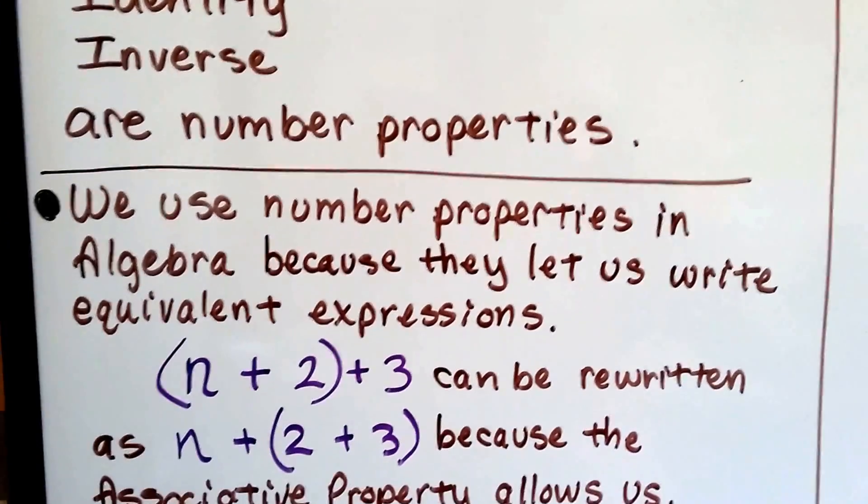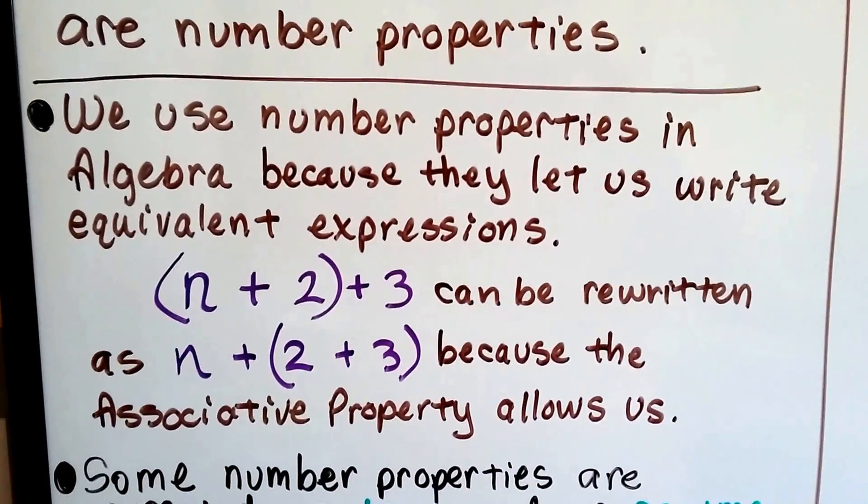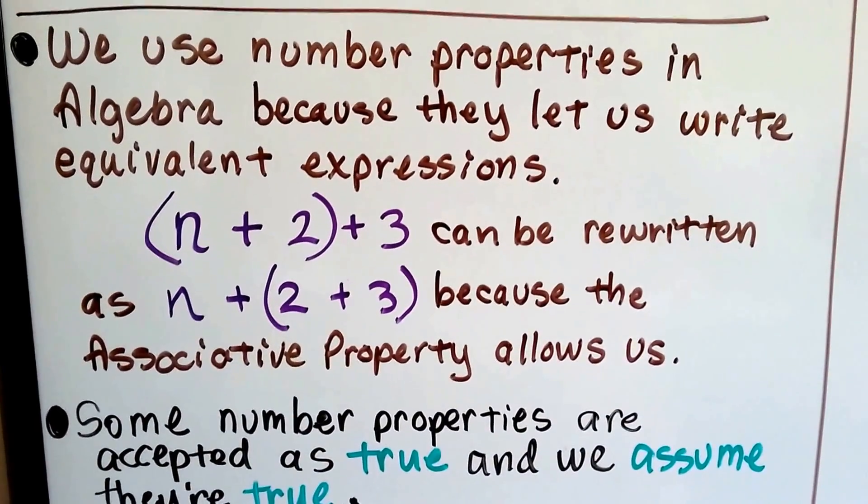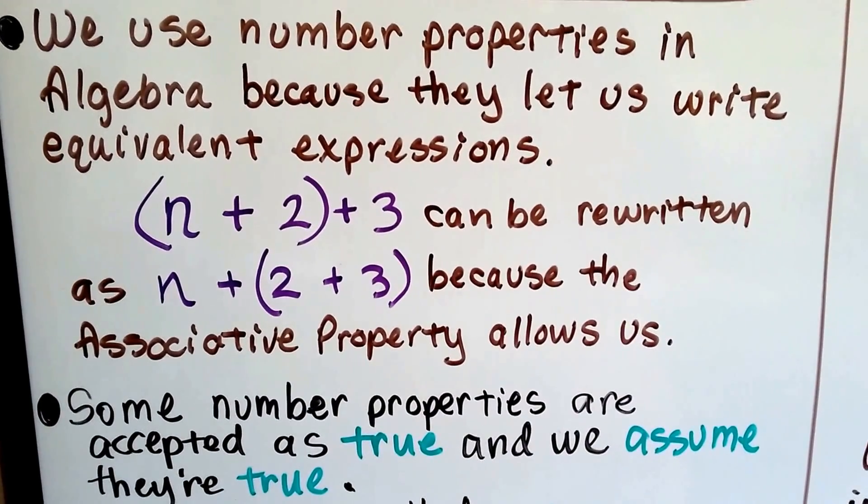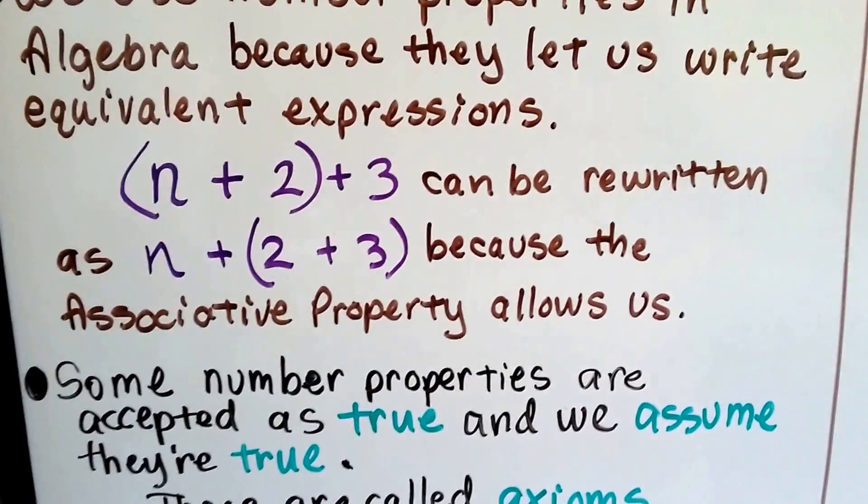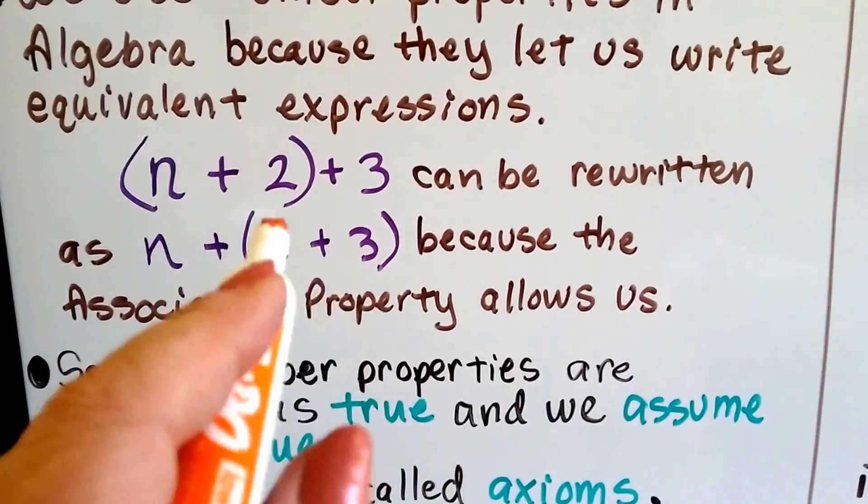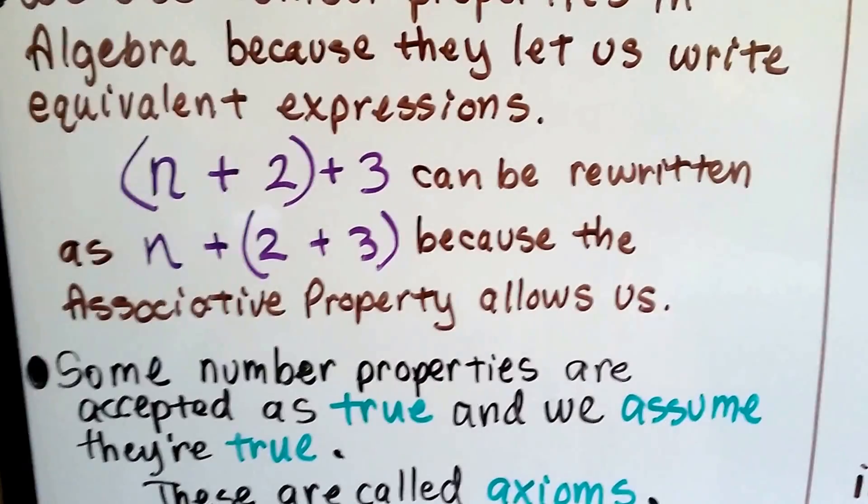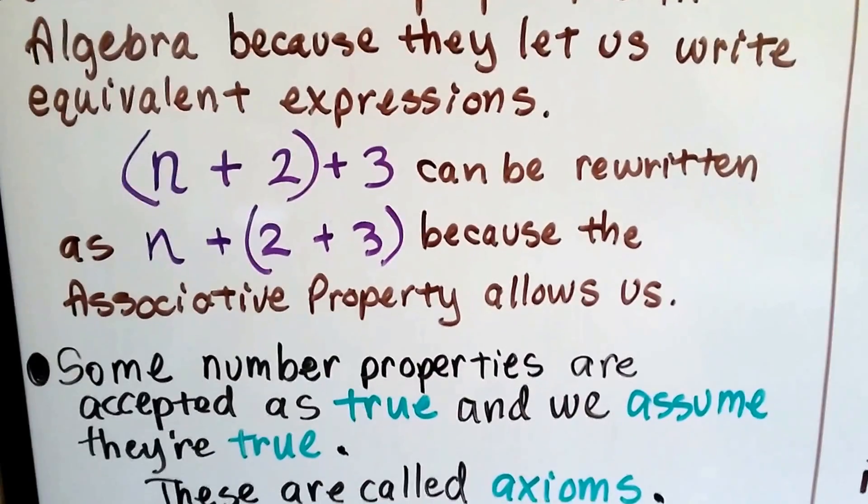We use number properties in algebra because they let us write equivalent expressions. n plus 2 in parentheses plus 3 can be written as n on the outside with the 2 plus 3 on the inside. That would be easier to add, wouldn't it? And that's because the associative property allows us to do this.